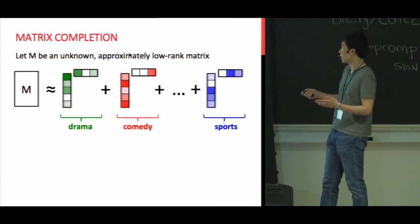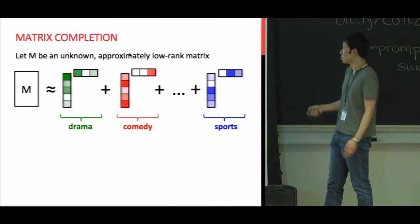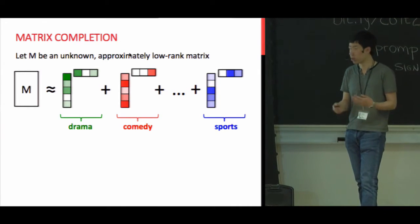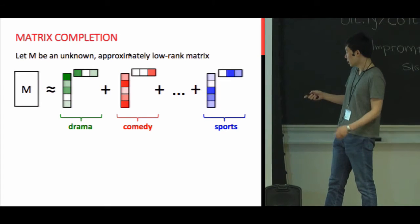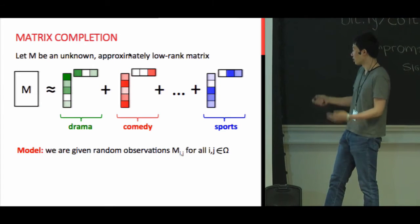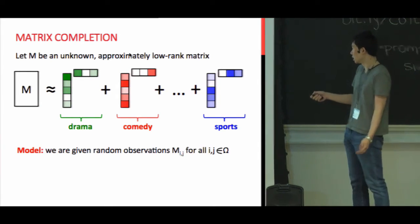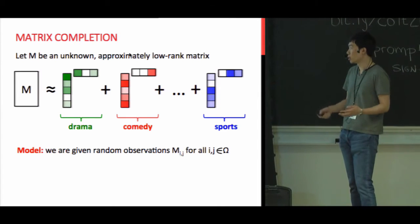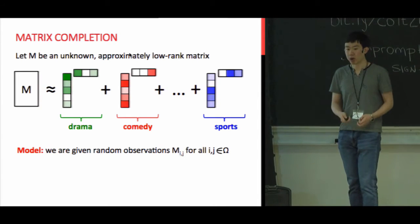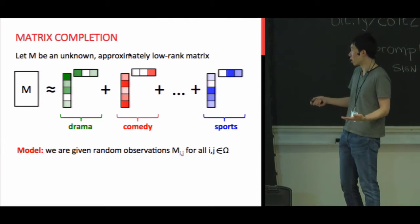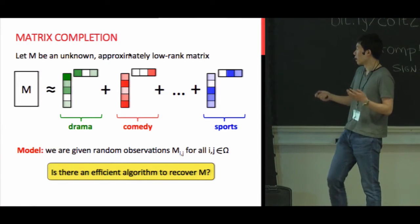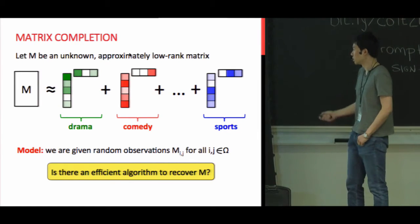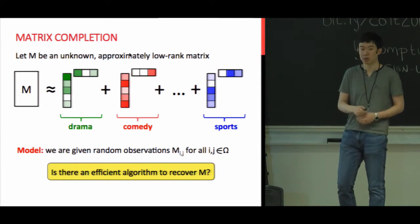A typical application in a recommendation system is that users give some ratings about movies, and we would like to recommend the next movie the user might want to watch. This corresponds to the setting where we are given random observations of entries in matrix M, and based on these we want to predict the entries that are still not revealed to us — asking whether there is an efficient algorithm to recover the low-rank matrix M.